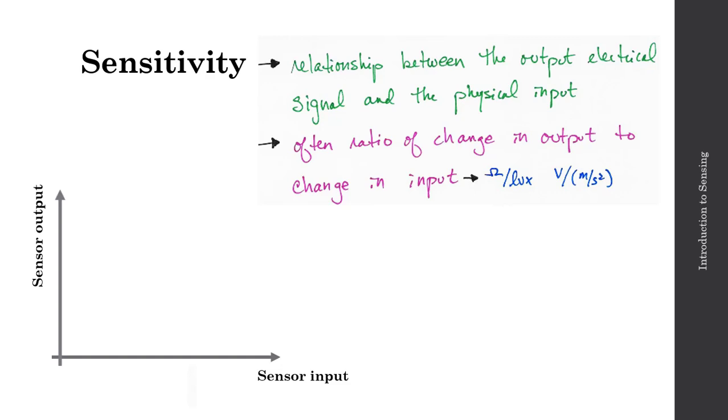Let's take a look at this graphically. On my x-axis here, I have sensor input, and on my y-axis, I have sensor output. And my sensitivity, written as K typically, my sensitivity K will effectively be the slope of that curve.